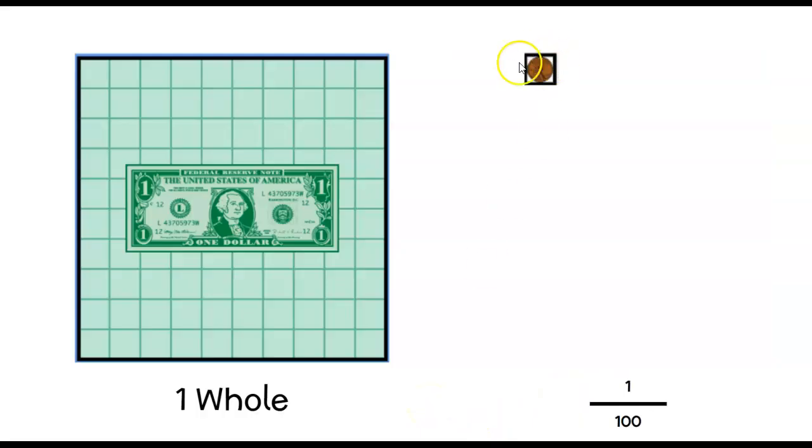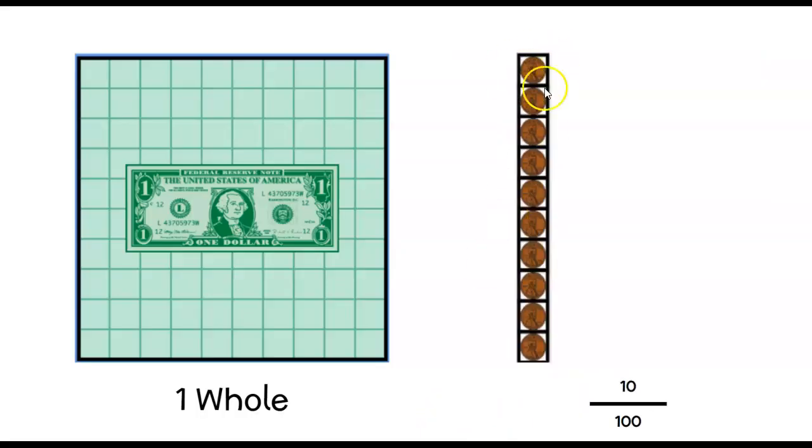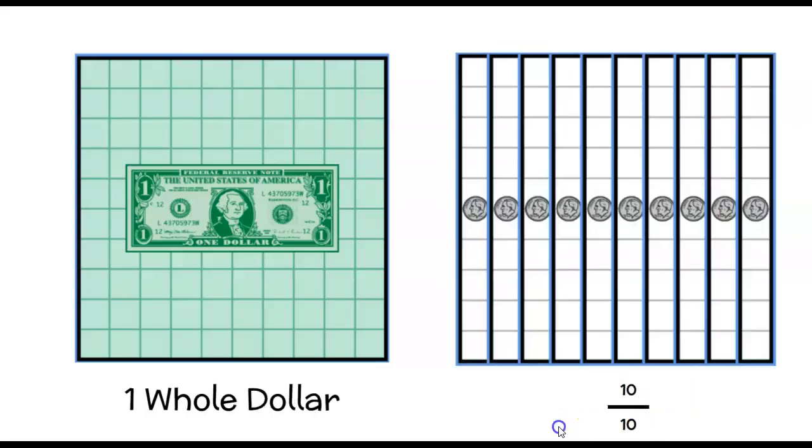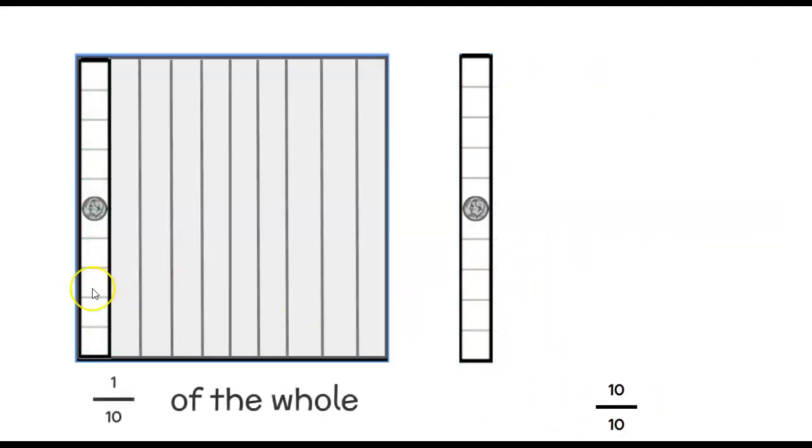One of them by themselves is one out of a hundred. If I have 10, then I have 10 out of a hundred. Okay. Now we go on to our tenths. And again, it takes 10 of them to cover up the whole. So we see it's 10 out of 10, right? If we move on to one tenth, then you can see it is one out of the 10 spaces needed to cover up the whole.